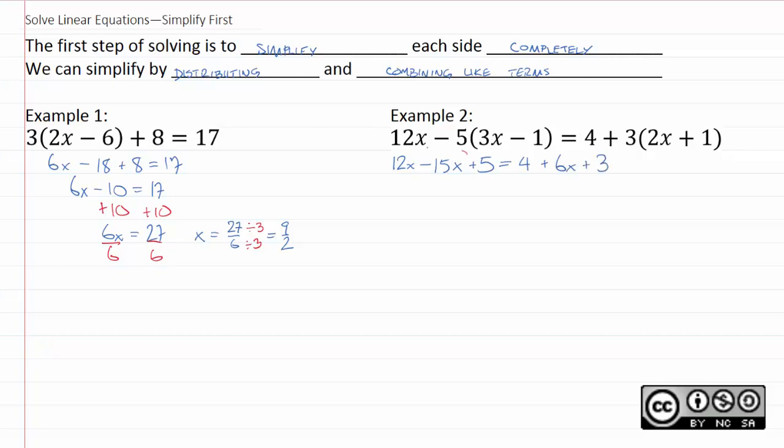On the left-hand side, we have these two x terms we can combine. On the right-hand side, we have two constant terms we can combine. 12x minus 15x is negative 3x. 4 plus 3 is 7 plus 6x here.